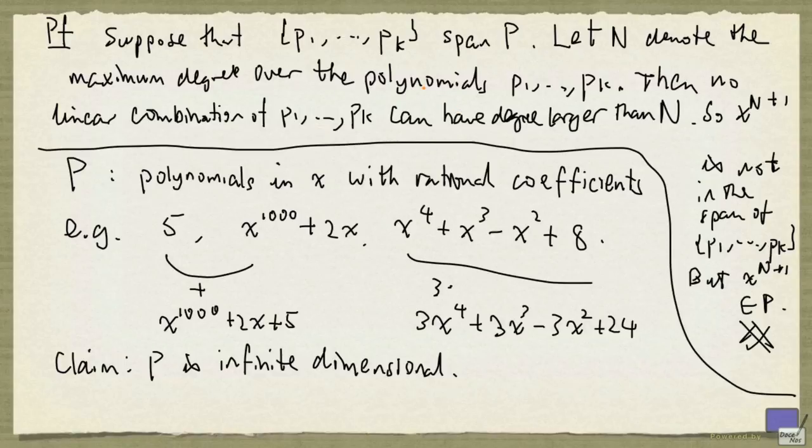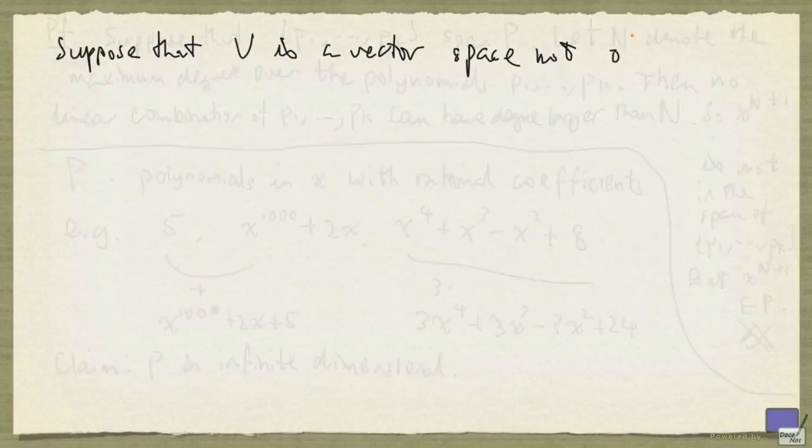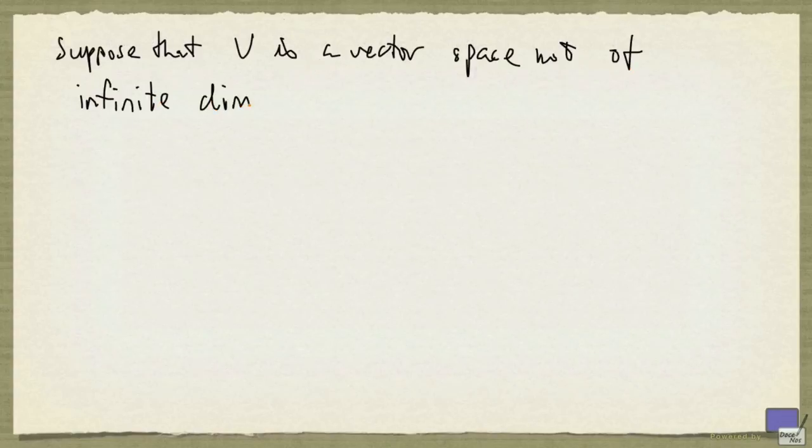So this is a short proof of the fact that P is of infinite dimension. Now suppose that V is a vector space not of infinite dimension. The null space of a matrix A is such an example. Now the question that we'll address in the next video is, does the number of vectors required to span V depend on the choice of the vectors? To answer this question, we'll need to define a couple of notions. And that's what we'll begin with in the next video.